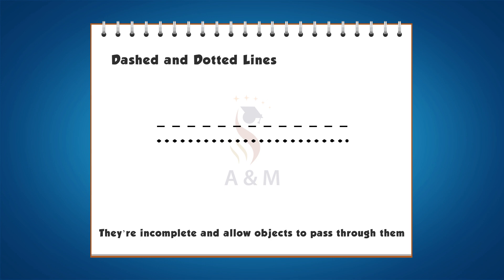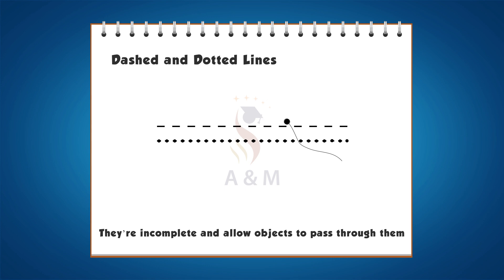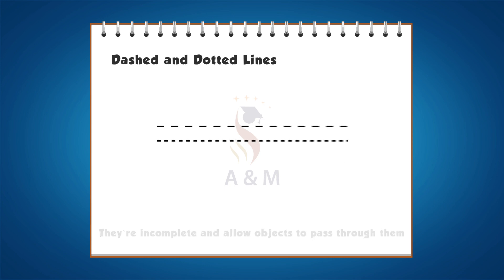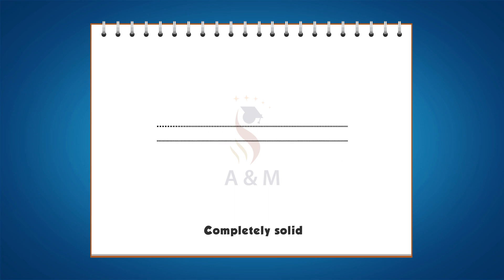They are incomplete and allow objects to pass through them. A thick, vertical, dotted or dashed line is still a strong line, though not as strong as where the line is completely solid.